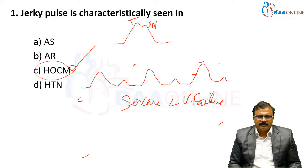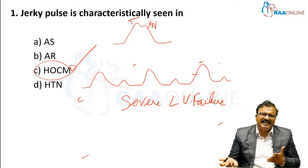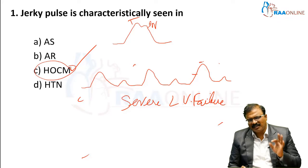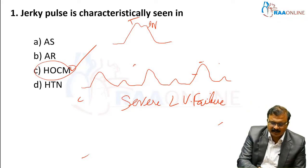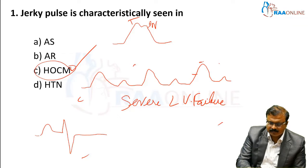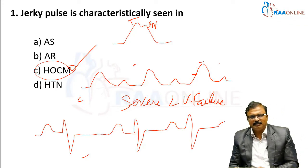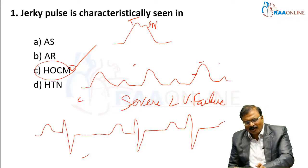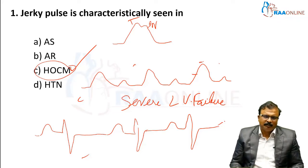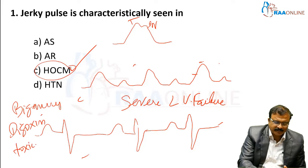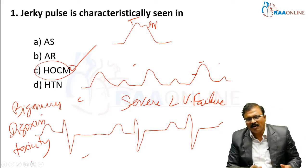If you know the pulses and their characteristics, it is easy to identify which pulse is present in which condition. The last one is bigeminy — every normal beat is followed by an ectopic beat with a pause. Bigeminy is a feature of digoxin toxicity.